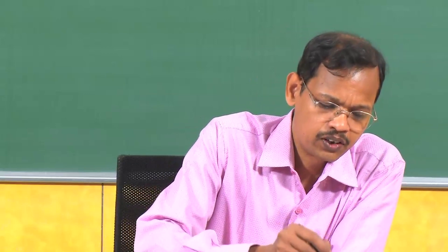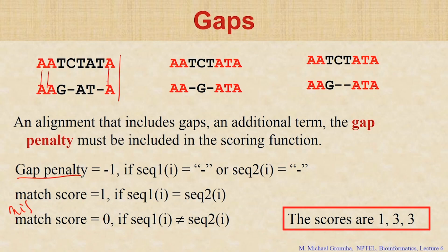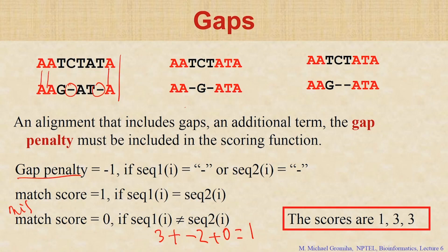So 1, 2, 3 — the alignment match score is 3. This is minus 1, this minus 2, and others are 0. So this will be 1. We take this alignment. What is the matching score? 1, 2, 3, 4, 5 minus 2 equals 3. And the other: 5 minus 2 plus 0 equals 3.